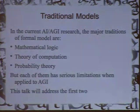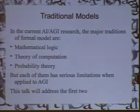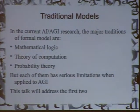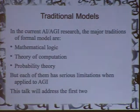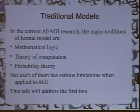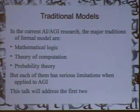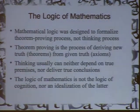I think each of them has some serious limitations when applied to AGI, even though each theory by itself is a great theory with many great successes in the history of science and mathematics. But when applied to AGI, the situation is fundamentally different. So I will quickly go through the first two.